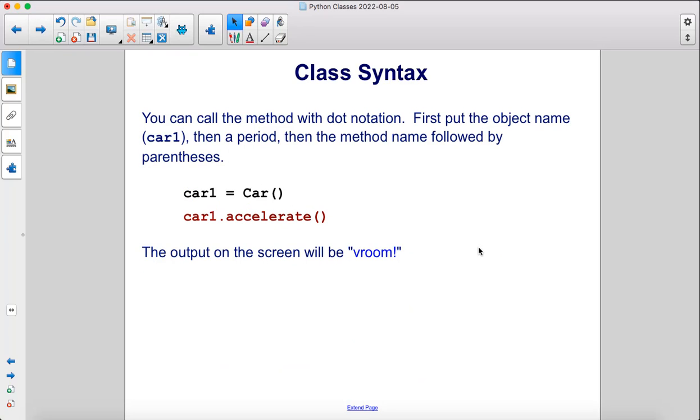You can call the method with dot notation. First, put the object name, car1, then a period, then the method name followed by parentheses. The output on the screen will be vroom.